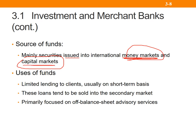What do investment banks do with their money? Well, typically they do have limited lending to their clients, however primarily their business is about providing advice. Examples of investment banks you may have heard of are organizations such as Macquarie Bank, Goldman Sachs, and JP Morgan.